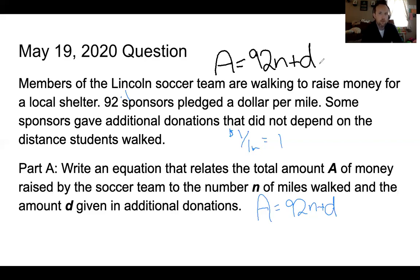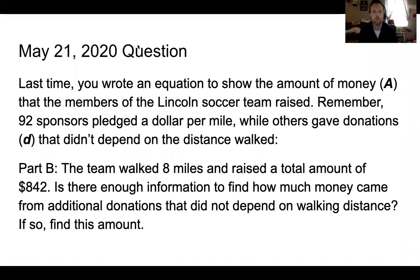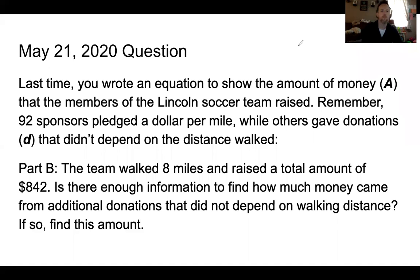We know that we have 92 sponsors pledging $1 per mile and then a bunch of extra donations. So for today's question, we're going to be using that equation. Last time you wrote an equation to show the amount of money A that the members of the Lincoln soccer team raised. Remember, the equation that we came up with was A equals 92N plus D.